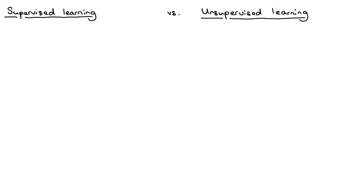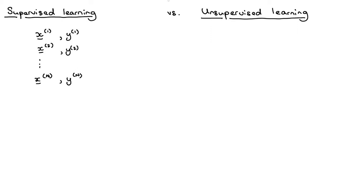In supervised learning, we normally get a data set, and the data set has some input vectors, which we've denoted as x in previous videos. So you would have your first training item x1, your second training item x2, and so on up to xn. Each one of these input vectors is a set of features for your training items, and each feature vector will be paired with the target value that you're trying to predict. We've denoted that as y — so you would have y1 for your first training item, y2 for your second, and so on up to yn.